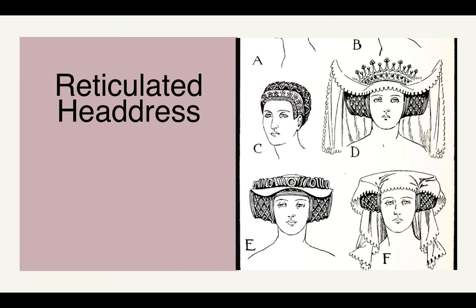Reticulated headdresses are an evolution of the crespinettes from the Gothic era, but instead of being spherical and rounded on the side of the face, they're more box-like. The wired boxes or side pieces are referred to as templars — attached to a circlet around the head. We also see a net-like covering for the hair called cauls (C-A-U-L-S), draped over headdresses.